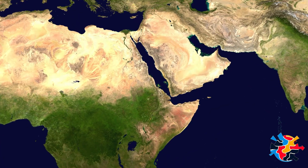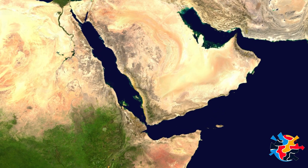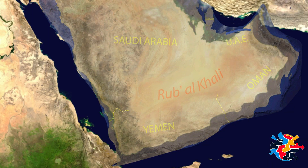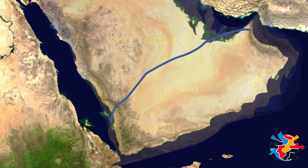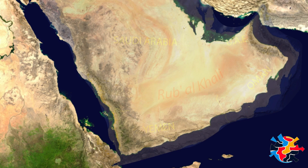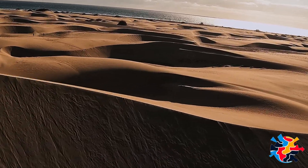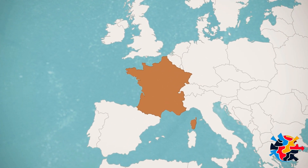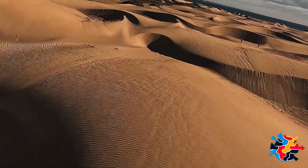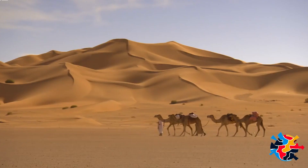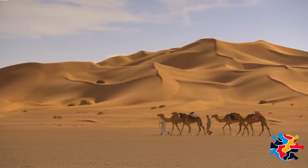The Rub' al Khali, or the Empty Quarter as it's widely known, offers a fascinating study of geographical extremes. This immense desert, the largest contiguous sand desert on the globe, dominates the lower portion of the Arabian Peninsula, spreading across four nations: Saudi Arabia, Yemen, Oman, and the United Arab Emirates. Its total area is an astonishing 650,000 square kilometers, dwarfing France, Belgium, and the Netherlands when merged together. A journey from one edge to the other spans approximately 1,000 kilometers or 620 miles in length and 500 kilometers or 310 miles in breadth.